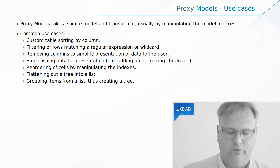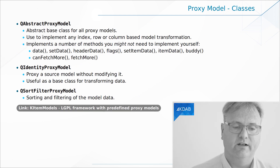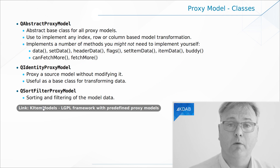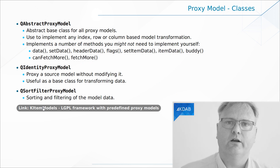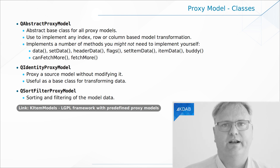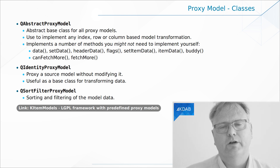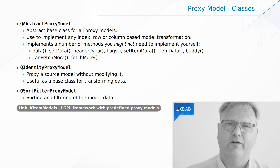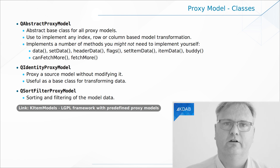Let's not go into too much detail on each of those. Let me give you one link though: if you Google for KItemModels, that's a KDE framework library that has, I think, 10 different proxy models that you can take right out of the box and use. Some of them are more for tree models, and if you have the need for tree models you'll be very happy about them. But some of them can also be used with regular list models.